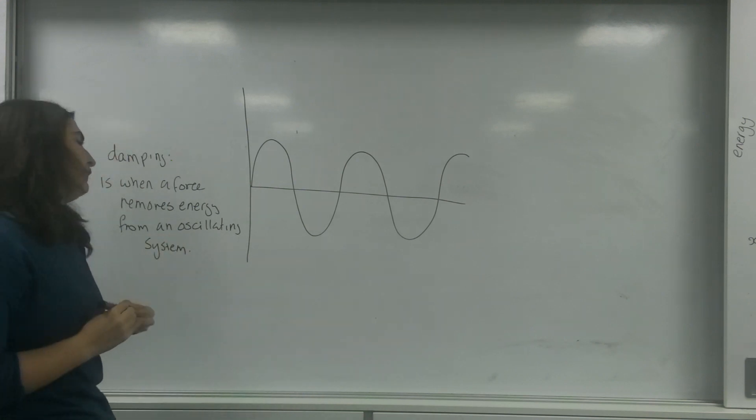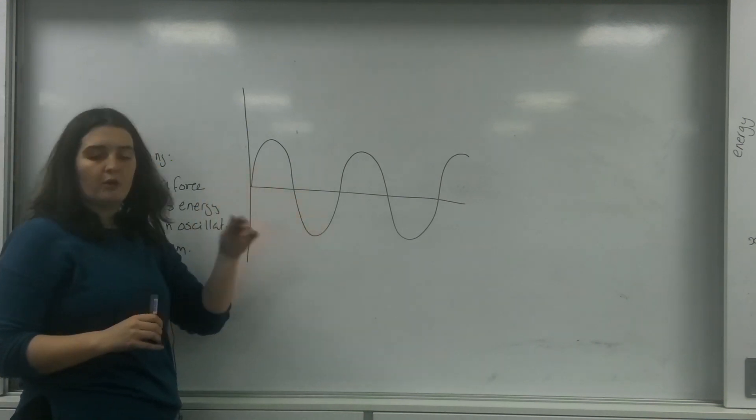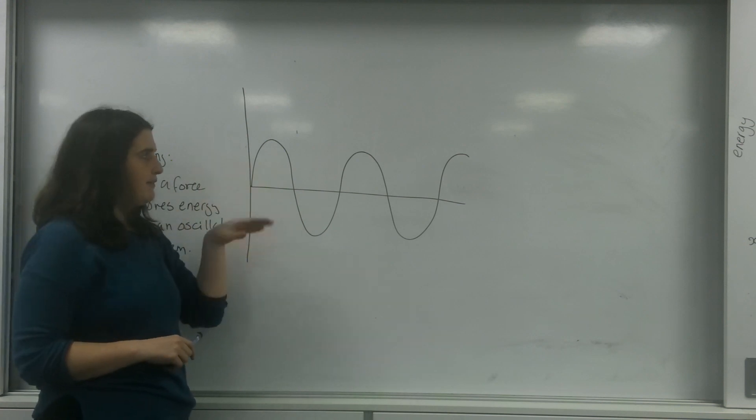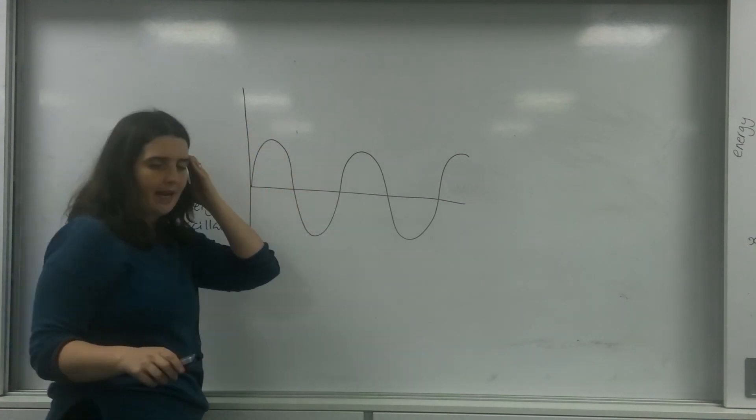So I've got here a normal oscillation. This is if damping never happened. I have the same amplitude, it's going to carry on forever.